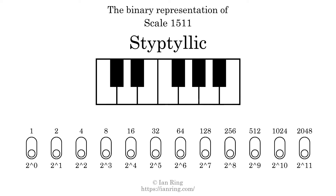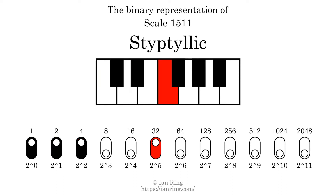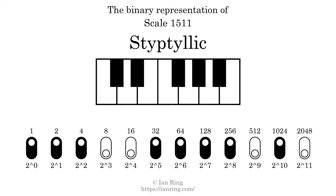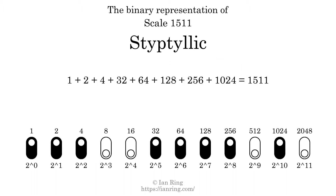The binary representation of this scale is determined by mapping tones of the scale to binary digits. Each binary digit represents a power of 2. To get the scale number, we add the powers of 2 together. The powers of 2 that are present in the scale, all added together, equals 1511. That is why the scale number, in decimal, is 1511.